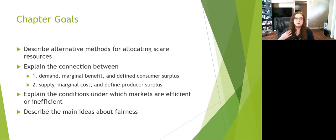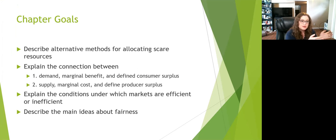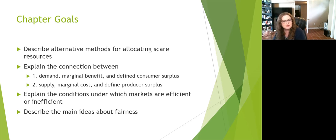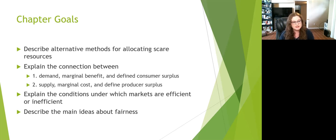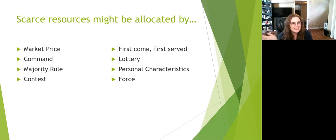Next, we'll explain the connection between demand, marginal benefit, and consumer surplus. On the supply side, we'll look at the difference between supply, marginal cost, and producer surplus. After that, we'll explain the conditions under which markets are efficient or inefficient — looking at total surplus and deadweight loss. Then we'll describe some of the main ideas about fairness. The allocation methods we'll cover include: market price, command, majority rule, contest, first come first served, lottery, personal characteristics, and force.